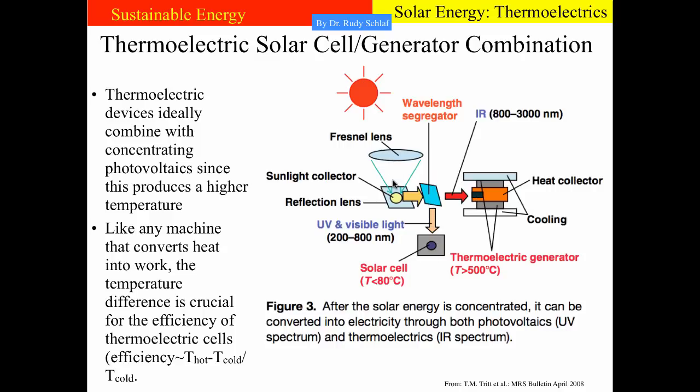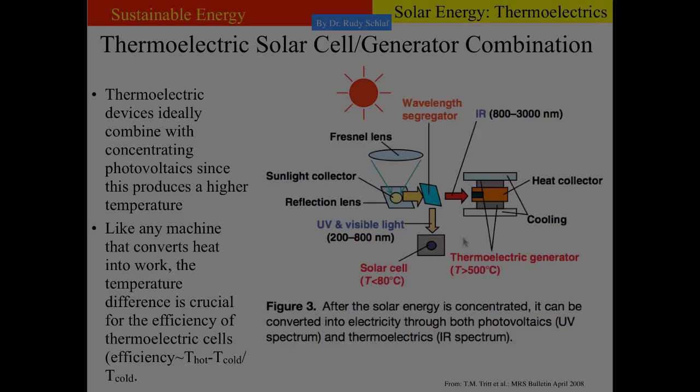It is useful to concentrate the sunlight because thermoelectric generators, like all machines that convert heat into work, benefit from a large difference between the hot and the cool end. This, as you know, increases the efficiency of such a converter.